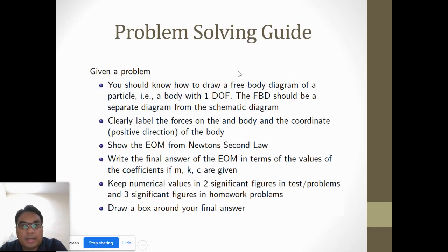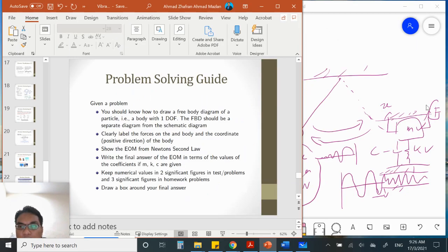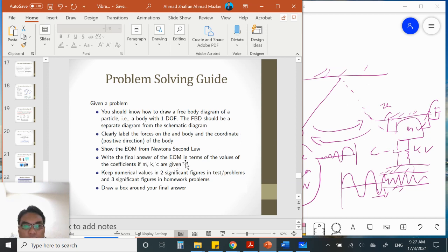Here are guidelines for solving single degree of freedom problems: you should know how to draw the free body diagram and identify whether it is free or forced vibration. Clearly label all forces and parameters - direction, positive or negative, force, M, C, K. Show the equation of motion based on Newton's second law. Write the final answer, and if values of M, C, K are given, use them. Keep numerical values to significant figures for accuracy. You can draw a box or underline your final answer.